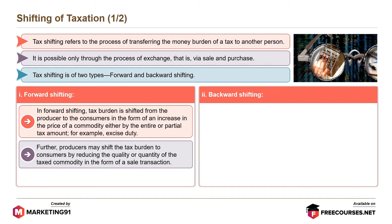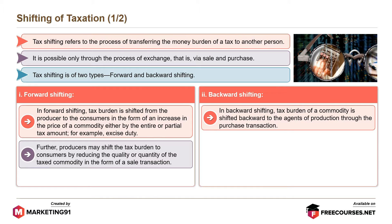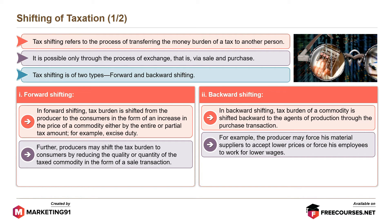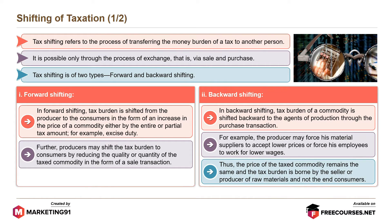Backward shifting: In backward shifting, the tax burden of a commodity is shifted backward to the agents of production through the purchase transaction. For example, the producer may force his material supplier to accept lower prices or force his employees to work for lower wages. Thus, the price of the taxed commodity remains the same and the tax burden is borne by the seller or producer of raw materials and not the end consumers.